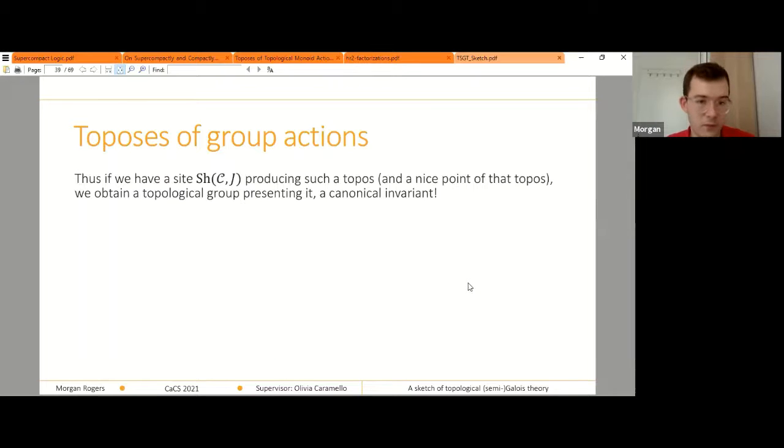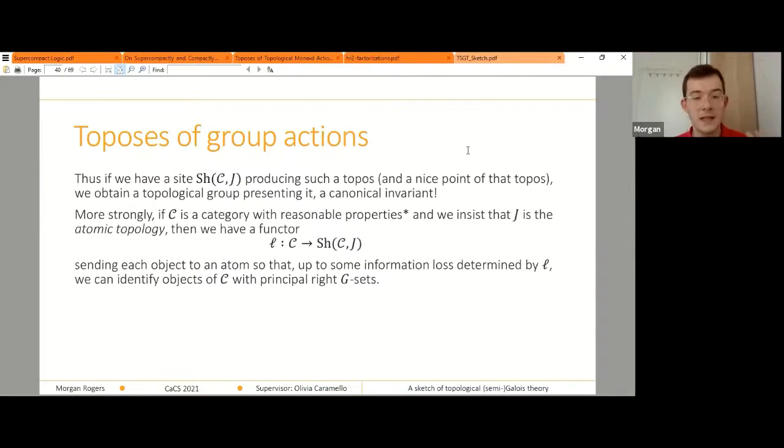So also we can recover a site. I mentioned that we can describe any Grothendieck topos using a site. And in this case, the site that we, the kind of canonical site, consists of those atoms that I mentioned. So the irreducible G-sets and the atomic topology. So whenever I have a site that produces a topos of this form, then I can look at the atoms of it. And I obviously have a topological group presenting it, and that gives me an invariant of the site. But if the site is of a certain form, so it's a site which has reasonable properties, which is to say I can define the atomic topology on it, then I have a functor from C to my category. So this is a standard for the continuous actions of my topological group. And it sends each object to an atom. And so I can identify each object of C with one of these irreducible G-sets.